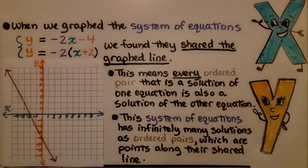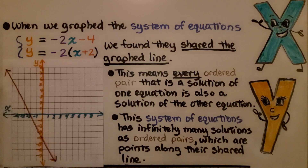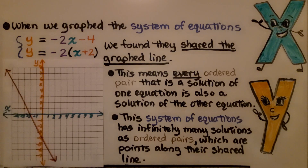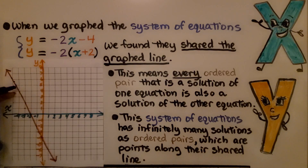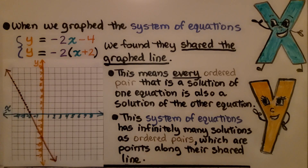When we graphed the system y = -2x - 4 and y = -2(x + 2), we found they shared the same graphed line. This means every ordered pair that is a solution of one equation is also a solution of the other. This system of equations has infinitely many solutions — every single point along the shared line is a solution for both equations.